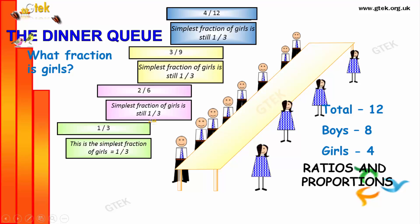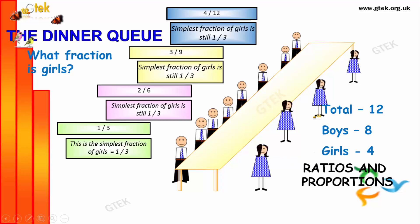Here, divide by 2, you will get 1 by 3. Here, you need to simplify it. 3 by 9, you need to simplify it as 1 by 3. And here, 4 by 12, simplifying it, you will get 1 by 3. The simplest fraction of girls versus the whole group is — the fraction of girls is 1 by 3.